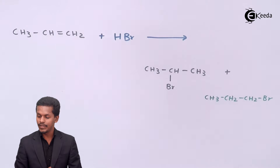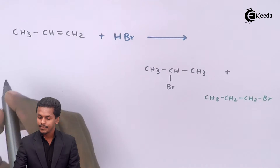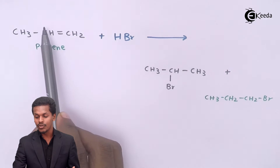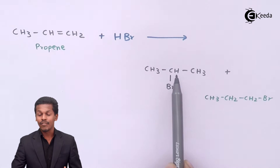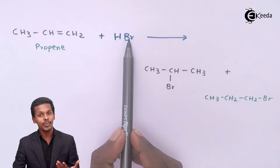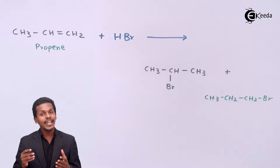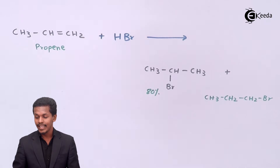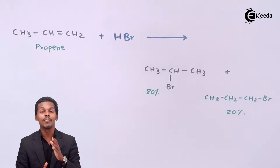Let me talk about the Markovnikov rule and the anti-Markovnikov rule. There are two possible products we could obtain during the hydrohalogenation of propene. It has been found that 80% of the product is the secondary alkyl halide and 20% of the product is the primary alkyl halide. The reason behind this distribution is explained by the Markovnikov rule.